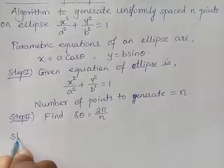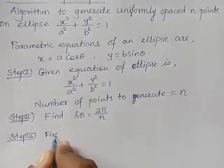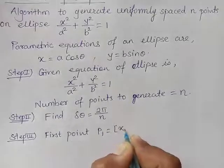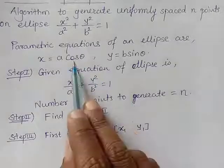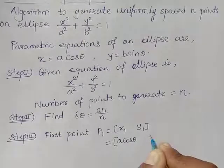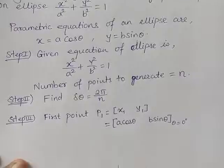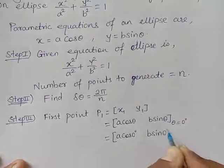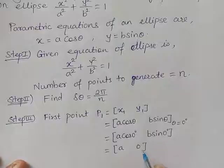Step 3: again, just like a circle, here also we will find the first point. The first point P1 has coordinates (x1, y1). Here theta is 0. We put that value of theta as 0 in the parametric equations, so it is (a cos theta, b sin theta) where theta is 0 degrees. That gives a cos(0°) and b sin(0°), which is (a, 0), because cos 0 is 1 so we get a, and sin 0 is 0.